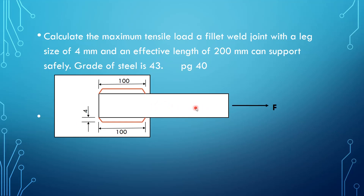The example is on page 40. Here we have our connection — this is our member which is in tension, and it's welded to a plate, probably a gusset plate. Here is the weld. The distance is 100 millimeters on one side and also 100 millimeters on the other side, and the leg size is given as 4 millimeters. This is the force we want to determine — the force that can be carried by this weld connection.